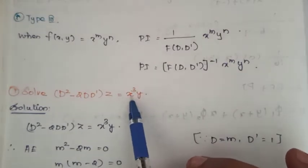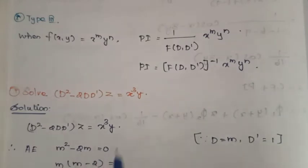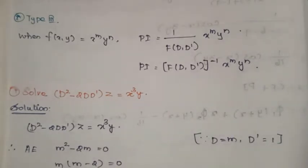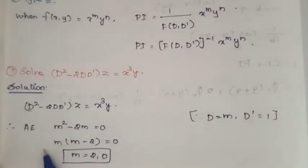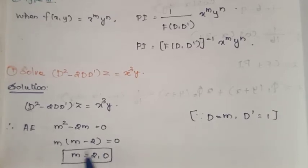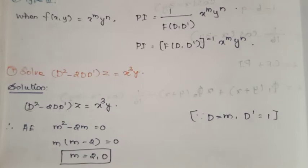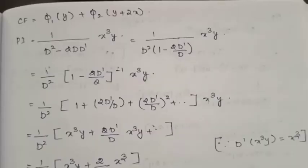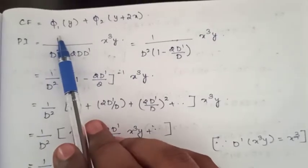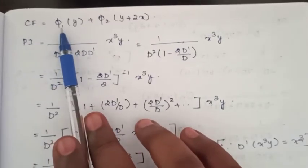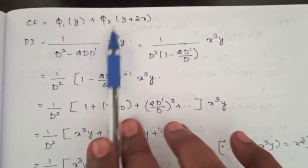The m value is 3 and n value is 1. First, find the auxiliary equation to get the complementary function. From the auxiliary equation, m is equal to 0 and m equal to 2. The roots are real and different. Complementary function: z = φ₁(y + m₁x) + φ₂(y + m₂x), that is φ₁(y) + φ₂(y + 2x).